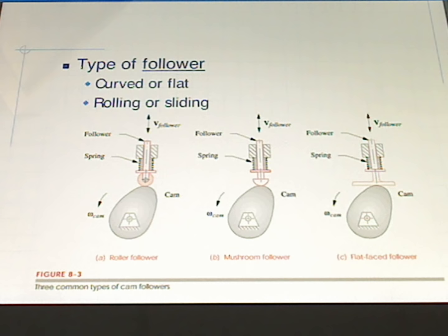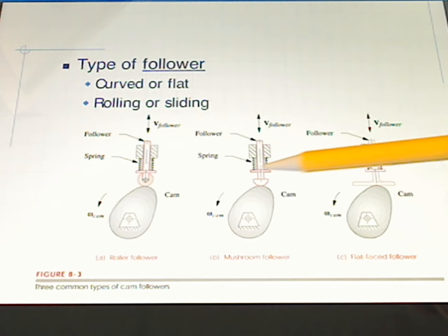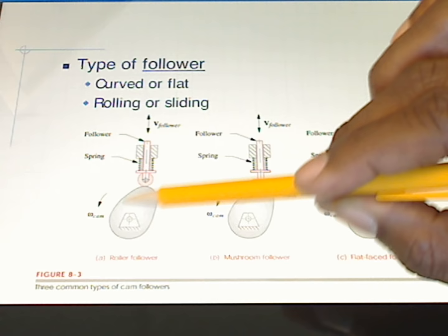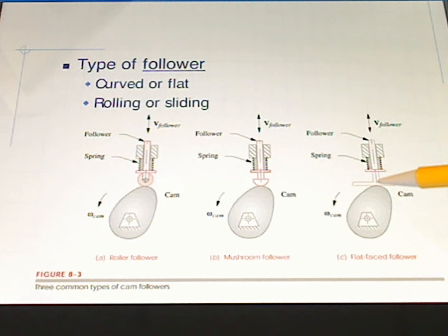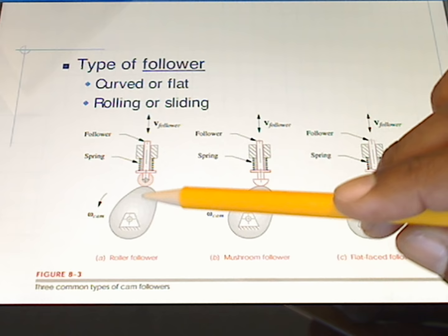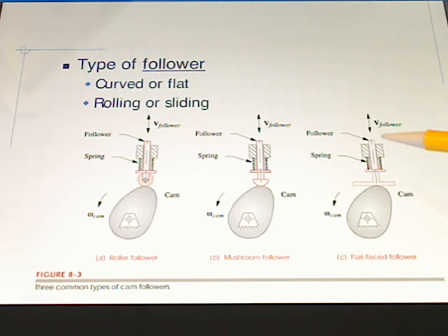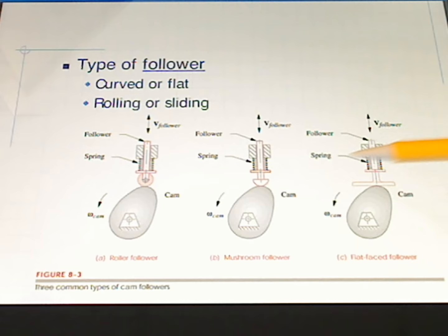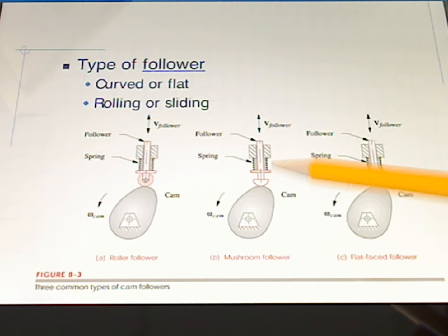We can also classify cams according to the type of follower — curved or flat, and rolling or sliding. In one example we have a rolling follower; in another we have a sliding follower with a mushroom shape, where the cam causes scrubbing or slipping. With a flat face follower, we've made the system smaller by removing the curved surface and wheel bearing. While there is more friction compared to a roller follower, less room is required. So we see a flat face follower, a mushroom type follower, and a roller follower.